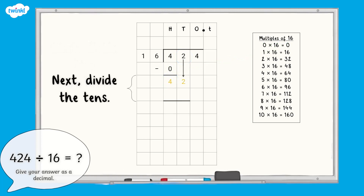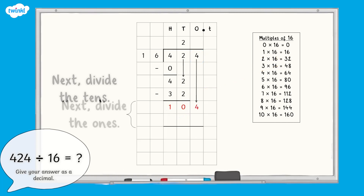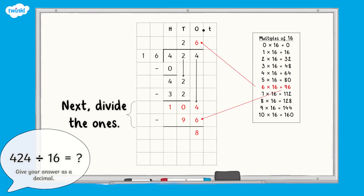Next, divide the tens. 42 tens divided by 16 equals two tens, with a remainder of ten tens. So we write a two in the tens column of our quotient. The remaining ten tens are exchanged for one hundred ones and are added to the four ones from our dividend, giving us 104 ones altogether. 104 ones divided by 16 equals six ones, with eight ones remaining. So we write a six in the ones column of our quotient.